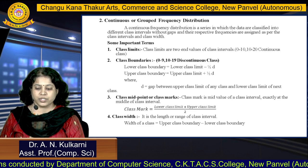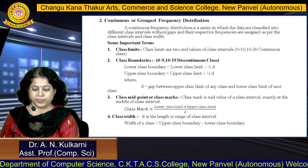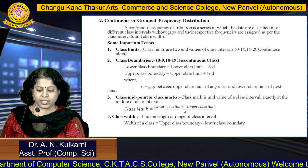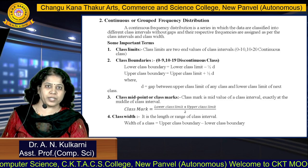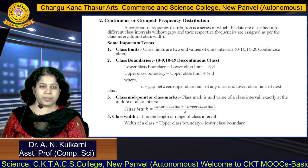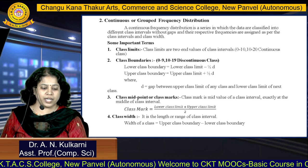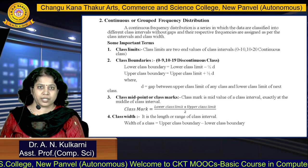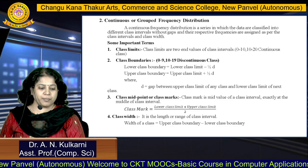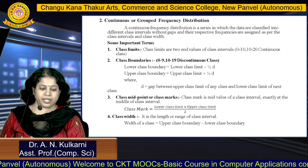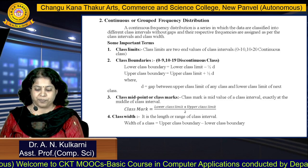Now see the important terms under the continuous frequency distribution. First, what is actually class limit? Class limits are the two end values of the class intervals. For example, the class is 0 to 10, then 10 to 20. This is a continuous class because the upper limit of the previous class is 10 and the lower limit of the next class is 10, so here there is no gap.